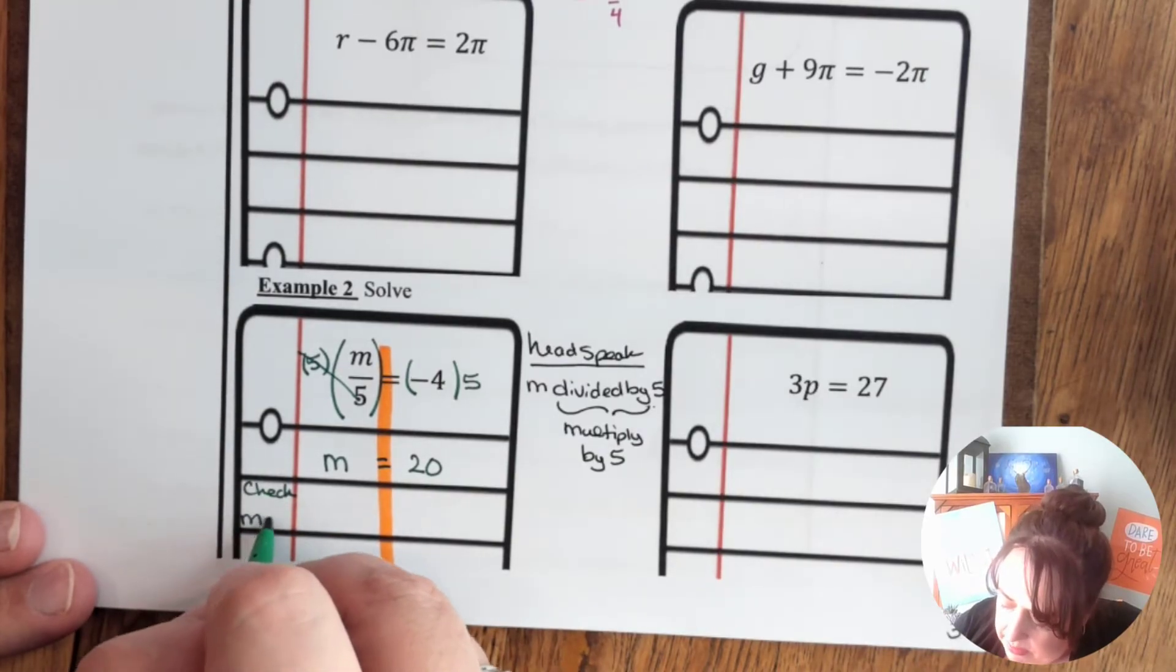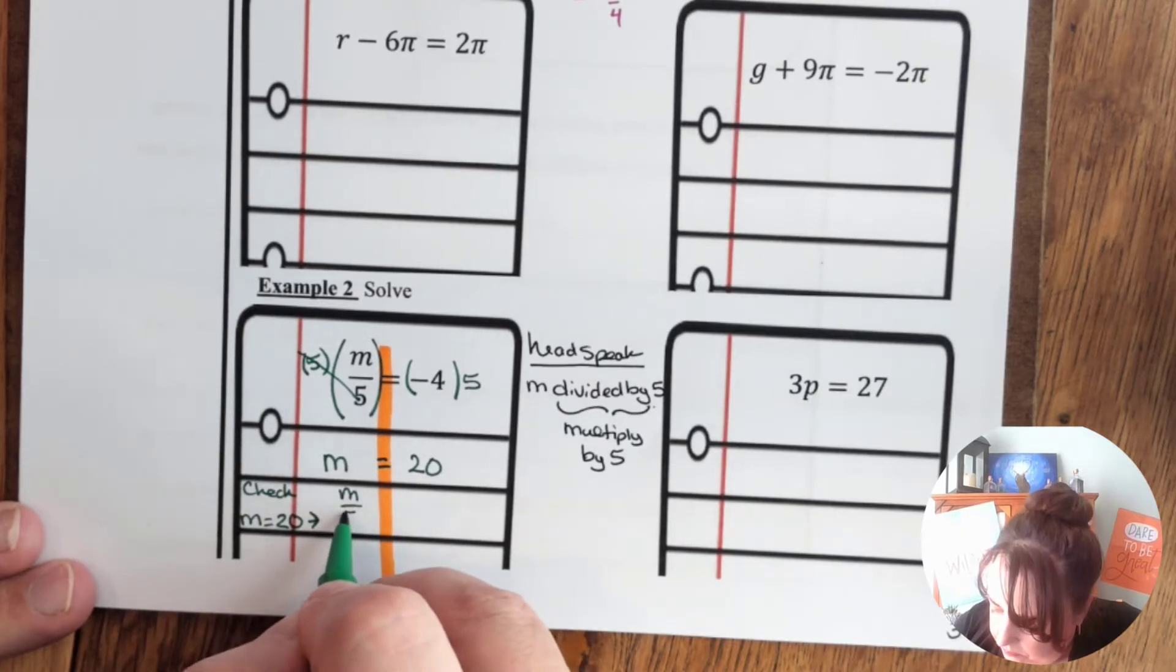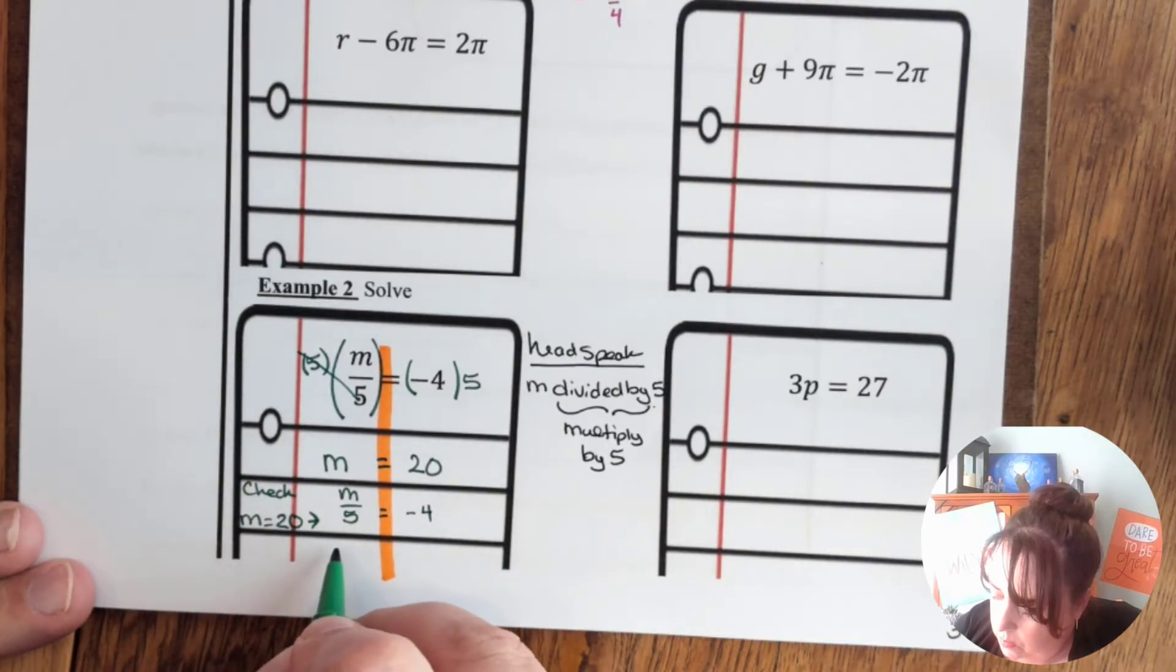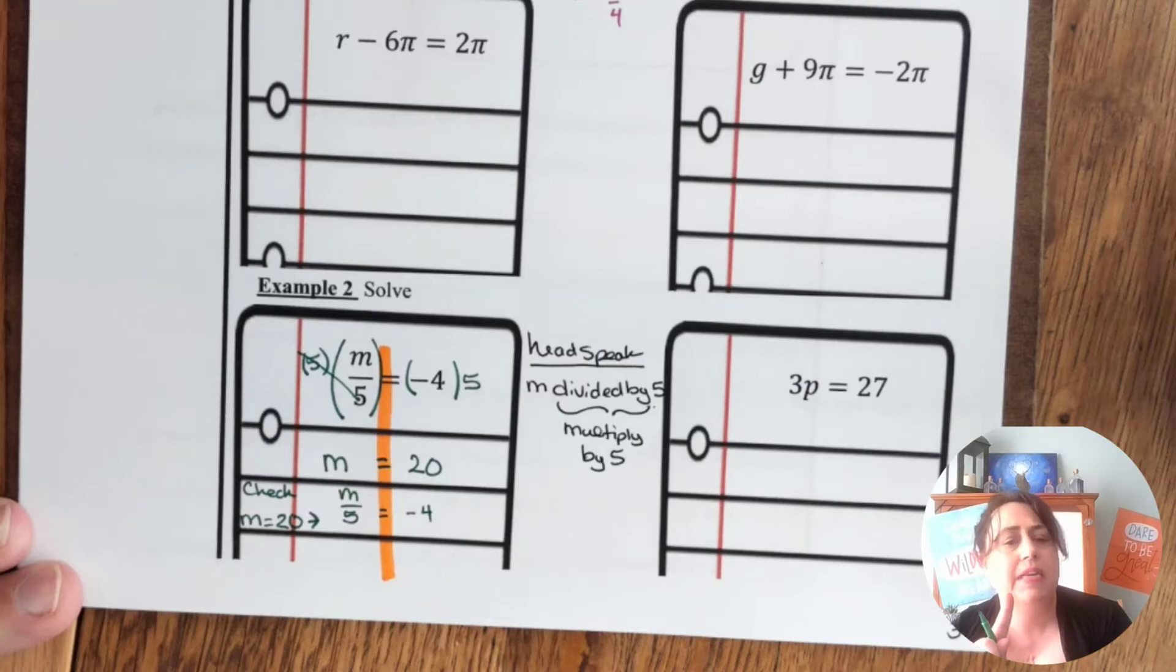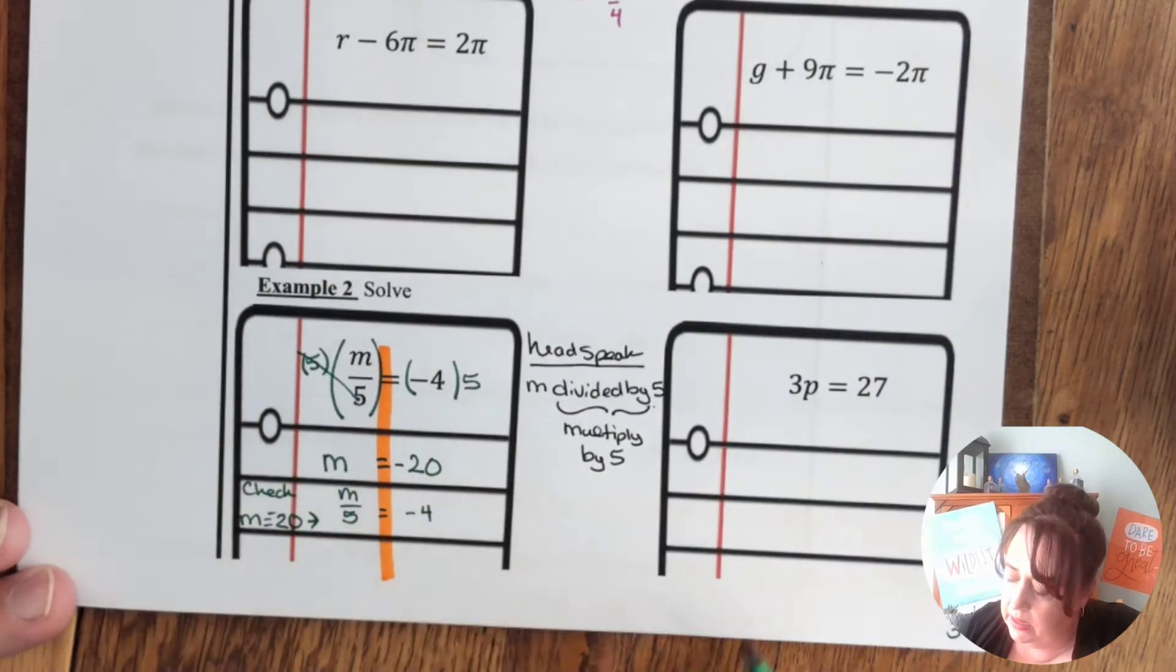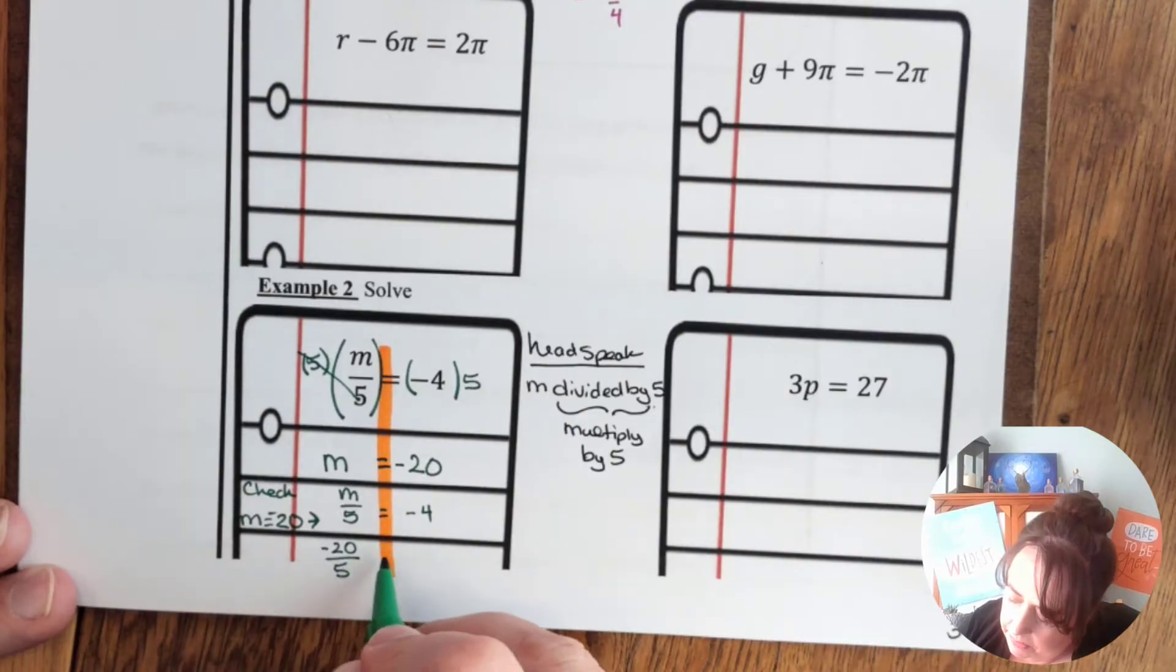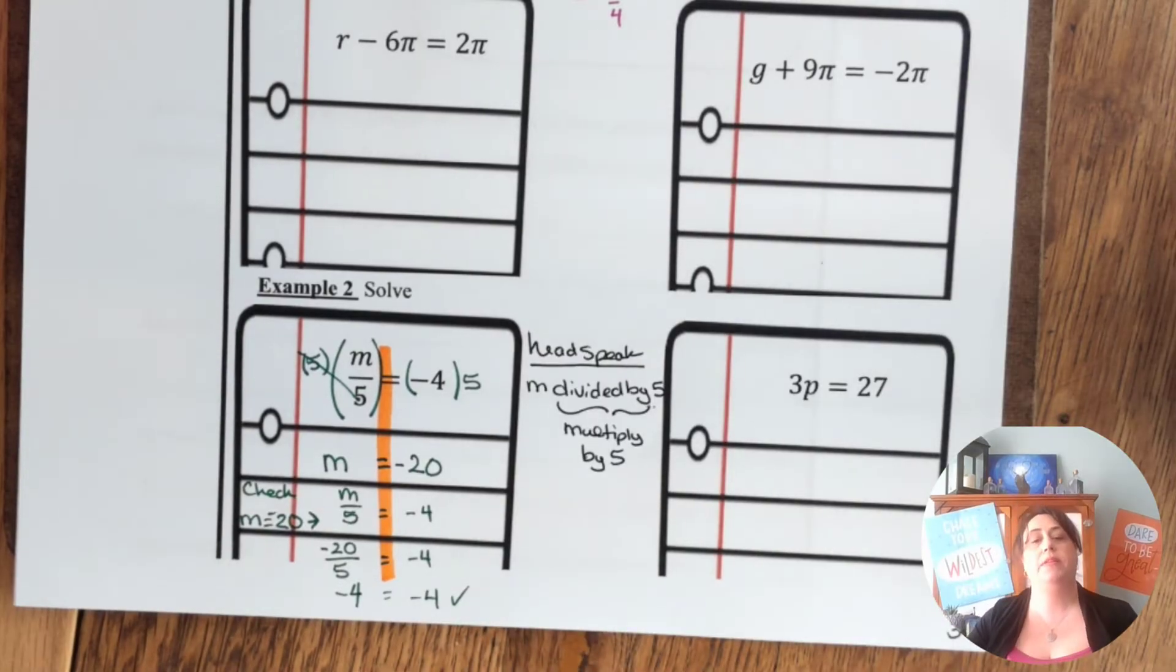When m is equal to 20. So, oh, that's not, oh, do you see my mistake? What did I forget? This is a negative 20. So be careful with your positives and negatives. So negative 20 over 5 equals negative 4. That is true. So be careful with that.